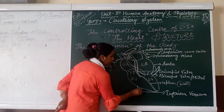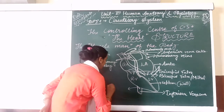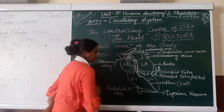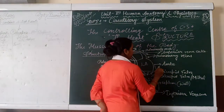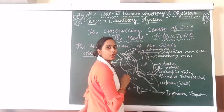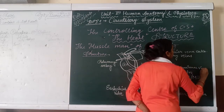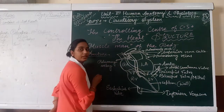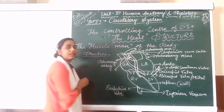There is a valve present in the inferior vena cava. The name of this valve is the Eustachian valve. There is also a valve present in the aorta that is known as the aortic semi-lunar valve. If we talk about the next type of valve, it is present in the pulmonary artery and is known as the pulmonary semi-lunar valve.